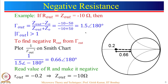We saw that when R_out was minus 10 ohm, gamma_out was equal to 1.5 at angle 180 degrees. We plotted 1 divided by gamma_out conjugate on the Smith chart, and from that read the value of Z_out equal to minus 10 ohm, which is consistent with that result.